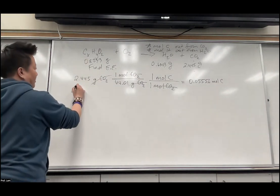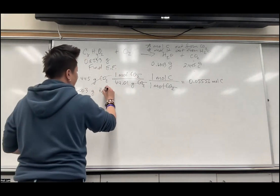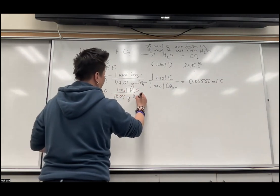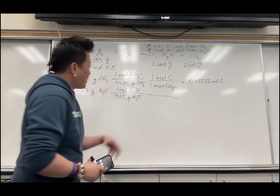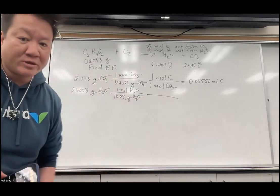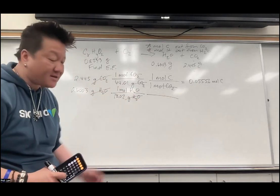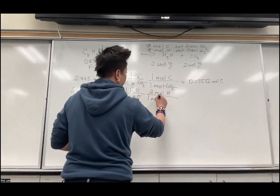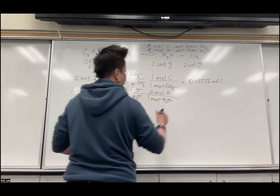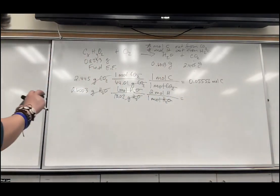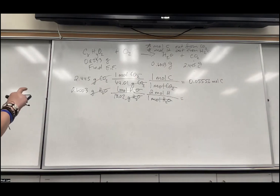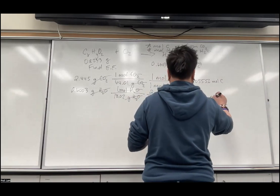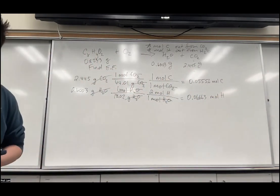Now for water: 0.6003 grams of H2O. One mole of H2O over 18.02 grams of H2O. We want moles of hydrogen — there are two hydrogens in water, so two moles of hydrogen per one mole of water. That gives us 0.06663 moles of hydrogen.